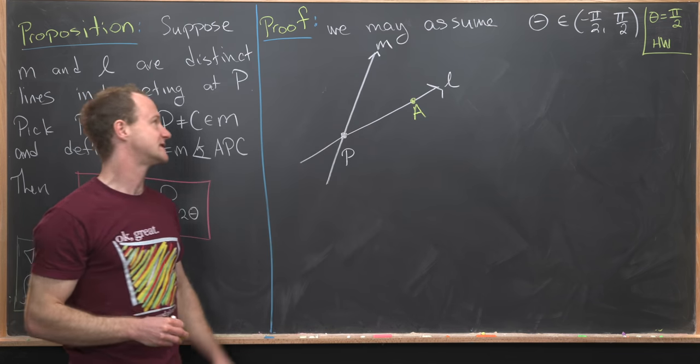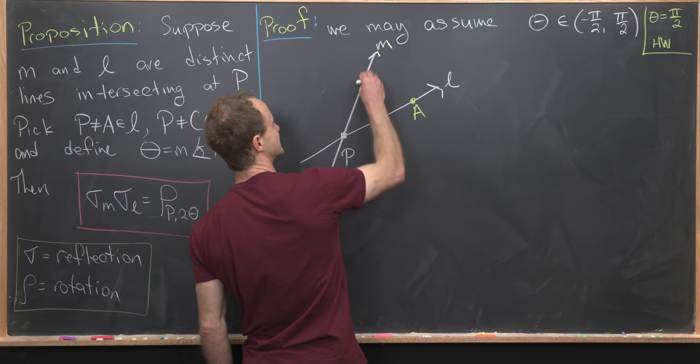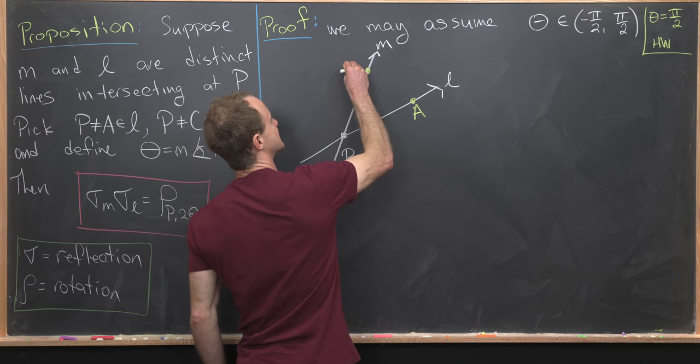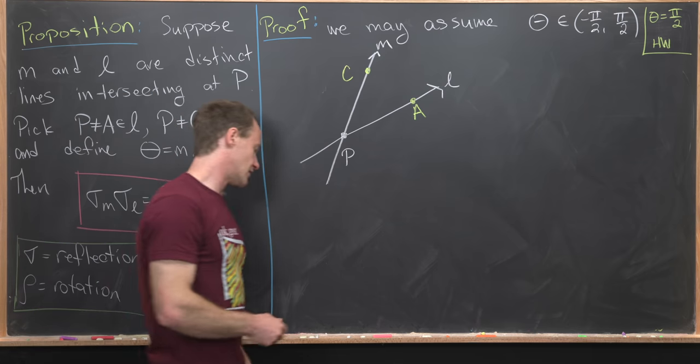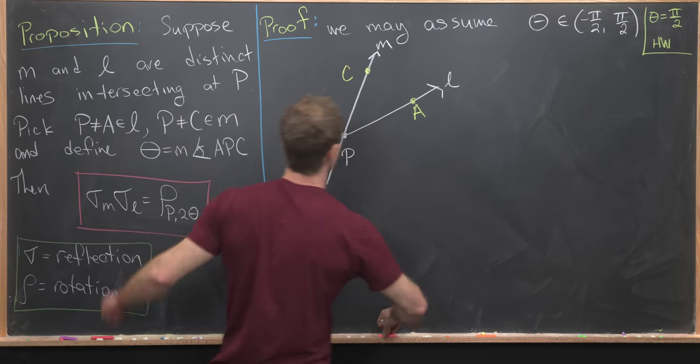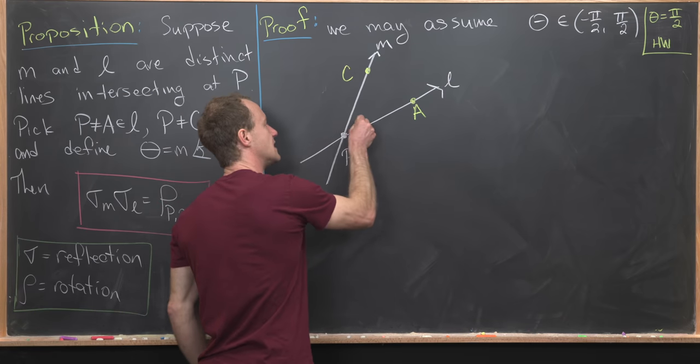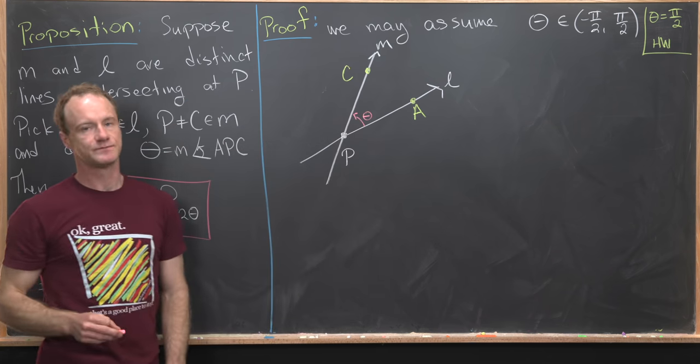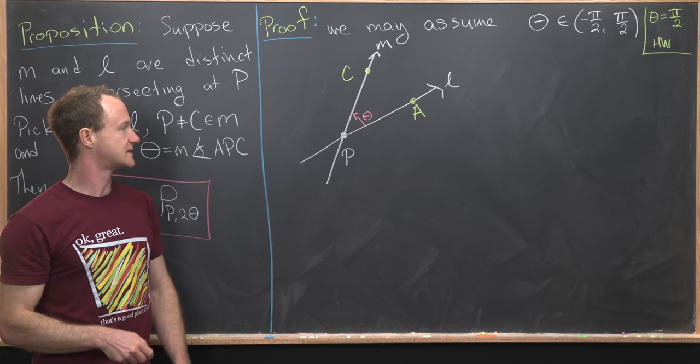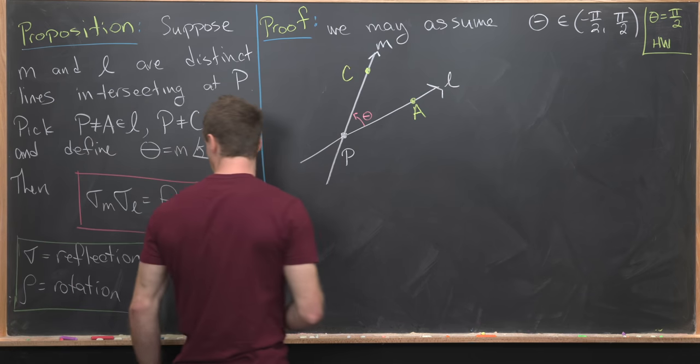We need a point C on line M, which is not equal to P. So let's put point C right there. And then notice by our setup here, this angle right here has measurement theta. So I'll just write that is measure theta.